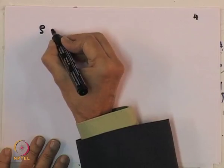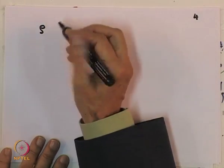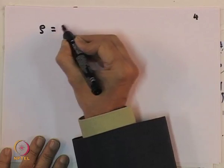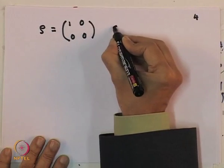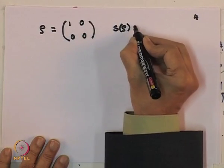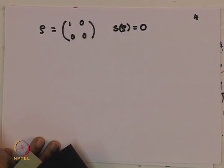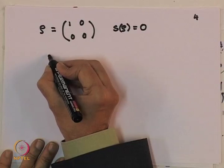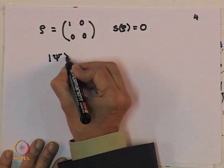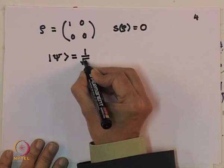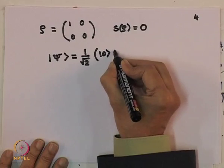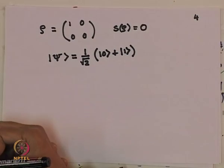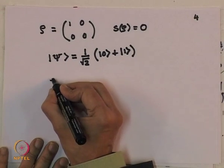Consider a pure state ρ. I know that the eigenvalues are 1 and 0. If I go over to a representation where it is diagonal, of course S of ρ equals 0. Now consider a state ψ which is equal to 1 over square root of 2 times (|0⟩ plus |1⟩).